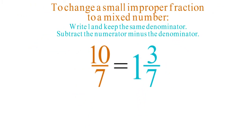Similarly, to change 19 elevenths, write 1 and keep the denominator of 11. Then subtract 19 minus 11 equals 8. So the result is 1 and 8 elevenths.